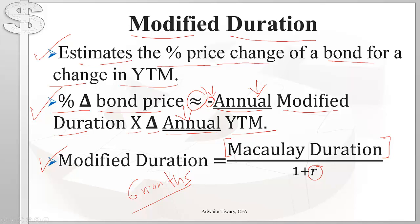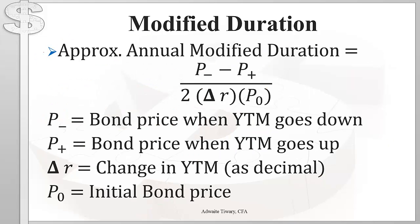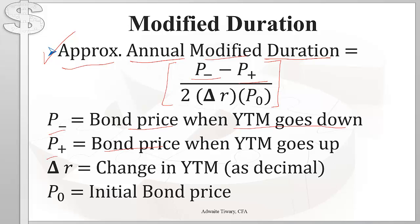This formula requires us to compute Macaulay duration first — but is there any way to compute modified duration directly? We can compute the approximate annual modified duration directly using this formula: P-minus is the bond's price when the yield goes down, P-plus is the bond's price when the yield goes up, delta-R is the change in yield to maturity expressed as a decimal, and P-naught is the initial bond price.